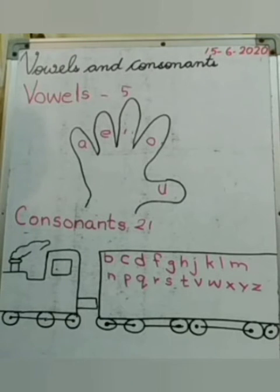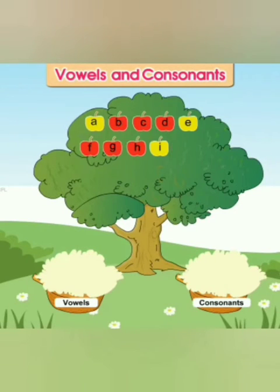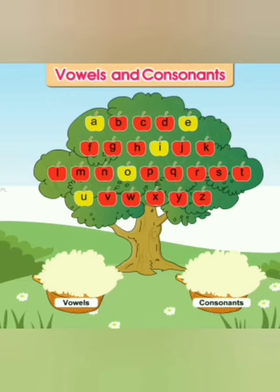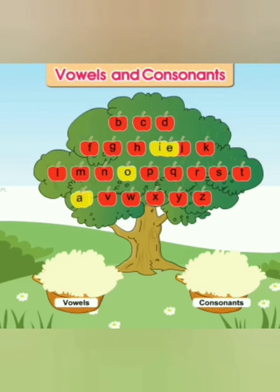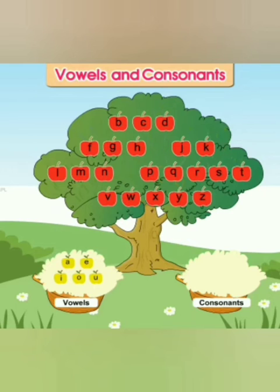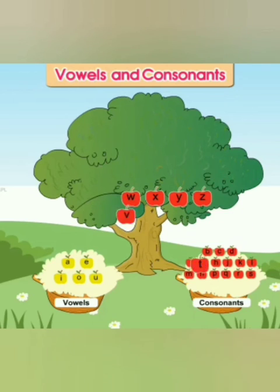Do you understand? Now, watch this video. There are 26 letters in the English alphabet. The letters written in yellow apples are vowels, and the letters written in red apples are consonants. See how the yellow apples are going into the vowel basket and red apples are going into the consonants basket.